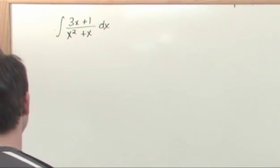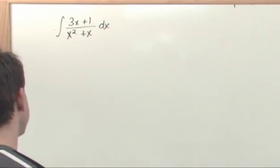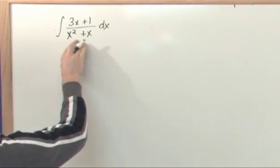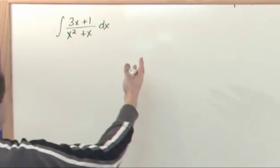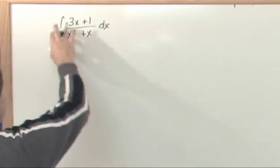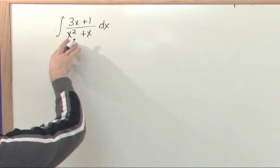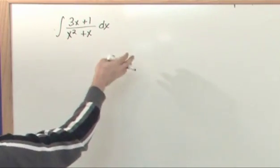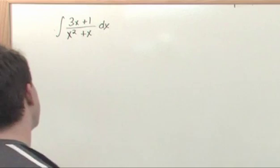Well, anytime you're given an integral, the first thing you want to see is if you can do a simple substitution, but I don't think you're going to find one here. Because if you substitute in for x² and you take the derivative, you'll get 2x, and that's not going to cancel anything. If you substitute in x² + x, you'll take the derivative of that, you'll get 2x + 1. That doesn't cancel with what you have on the top.